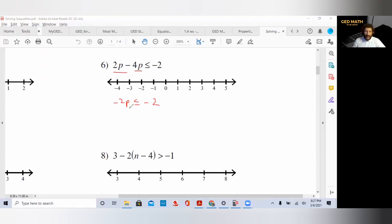If we want to get the p by itself, p is being multiplied by negative 2. We want to divide by negative 2. Whatever we do on one side, we do on the other. Cancel our negative 2s, we have p. Bring down the less than or equal to, and minus 2 divided by negative 2 is 1. But this is where people make the mistake. Remember, if you multiply or divide by a negative number, you must change the inequality. This inequality must be changed, so we got p greater than or equal to 1.